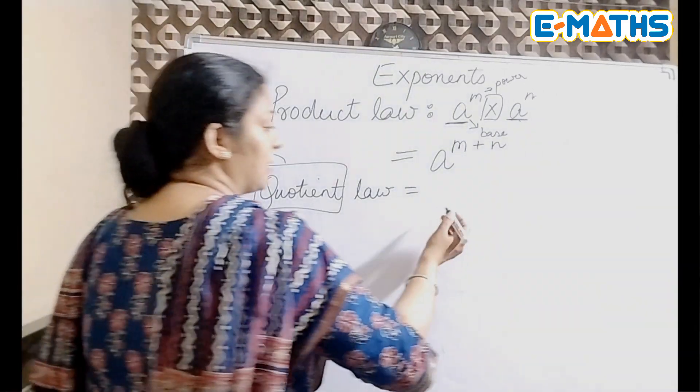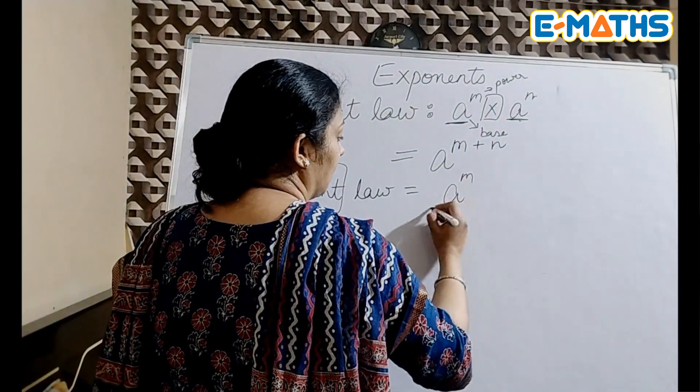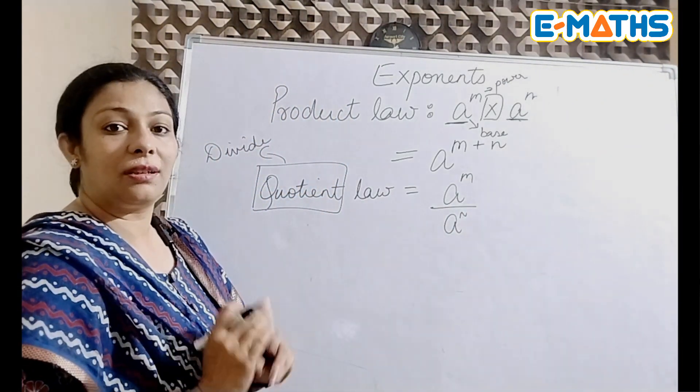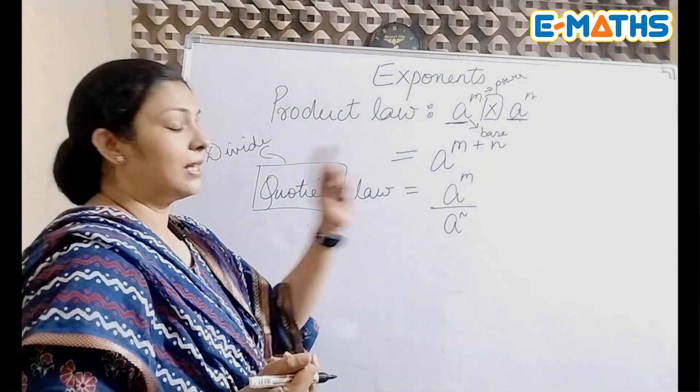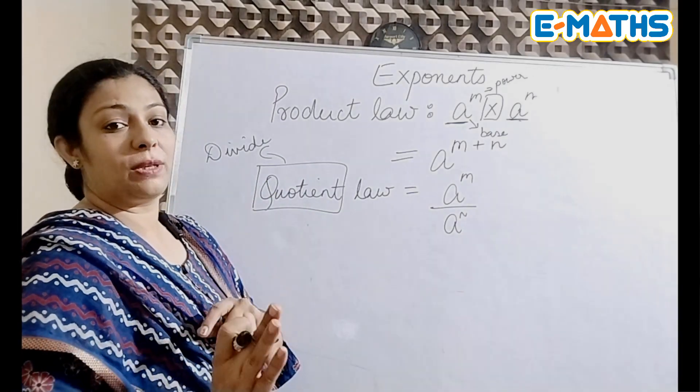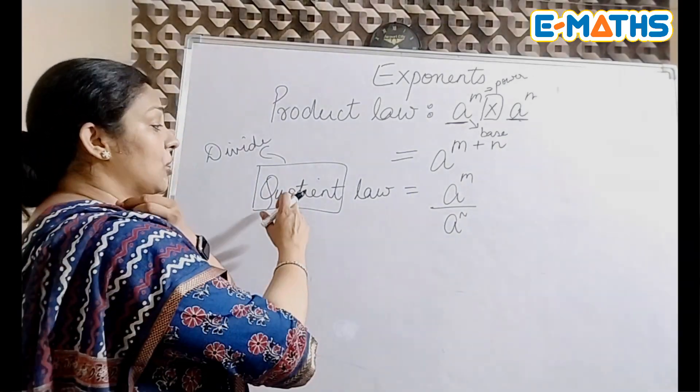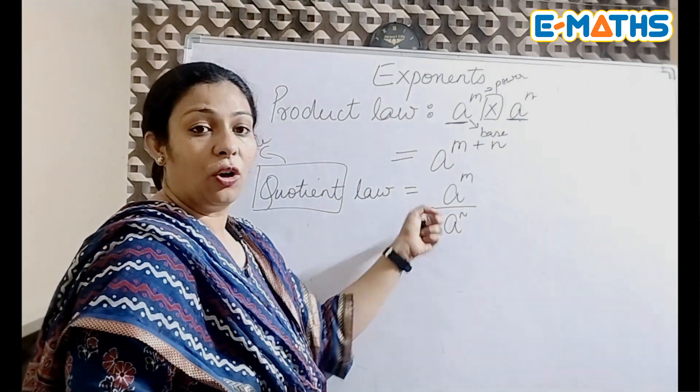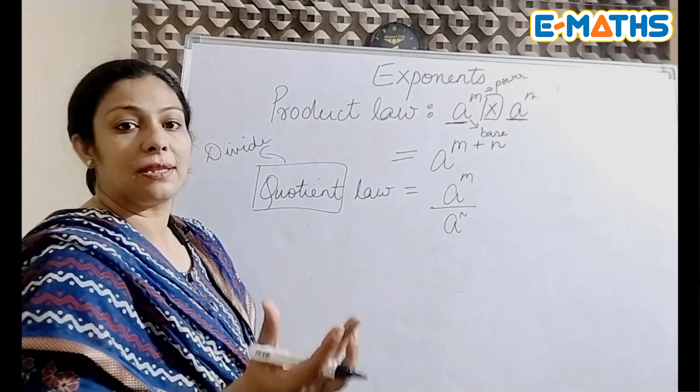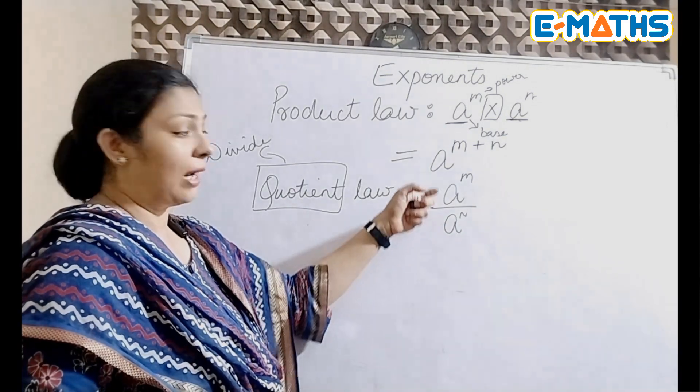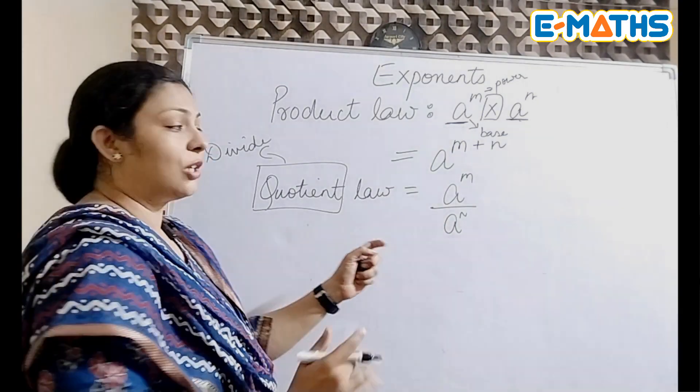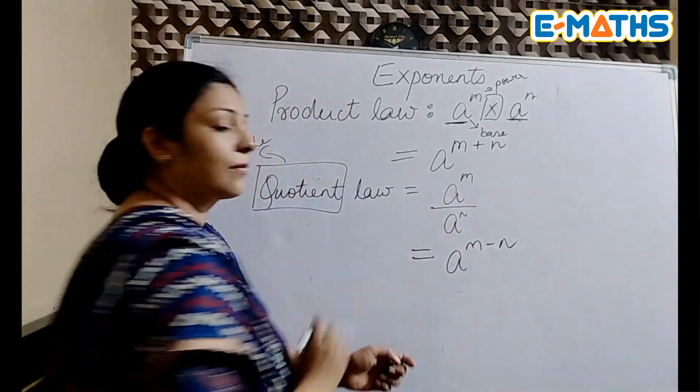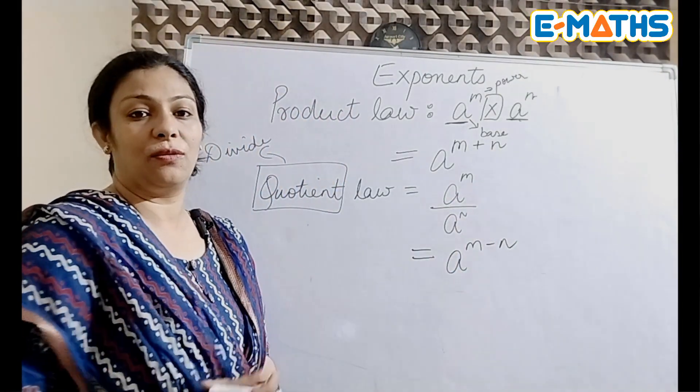Quotient law—as the name goes, quotient is something that we get when we divide two numbers. That means your question should have terms which are being divided, but again the terms should have the same base. The bases have to be same when you're applying such laws.